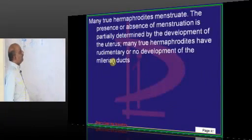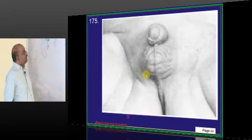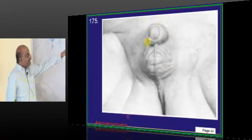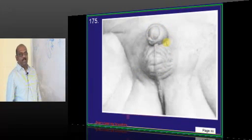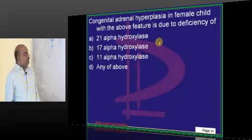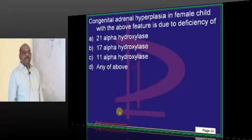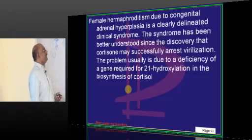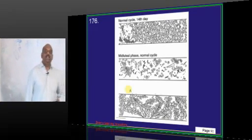Now doctor, you are finding a patient who is having clitoromegaly once more, virilization. Which type of congenital hyperplasia can lead to that? Commonly 21-alpha-hydroxylase is the one which leads to development of virilism.